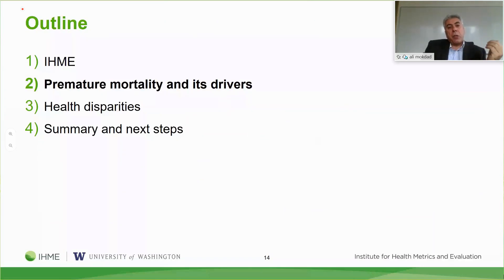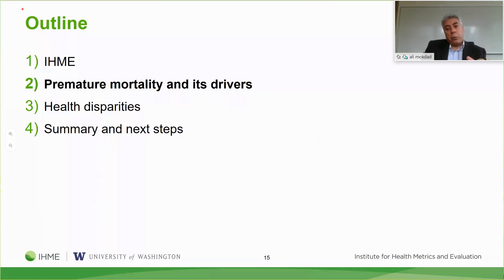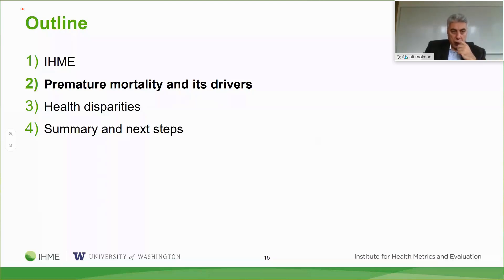Let me talk about premature mortality and its drivers. Premature mortality is defined here as under 70 years of age. This was from a grant from the Office of Disease Prevention that allowed us at IHME for the first time to produce data for the under-70 age group, and because we could group different age groups, we were able to create additional age groupings as well.